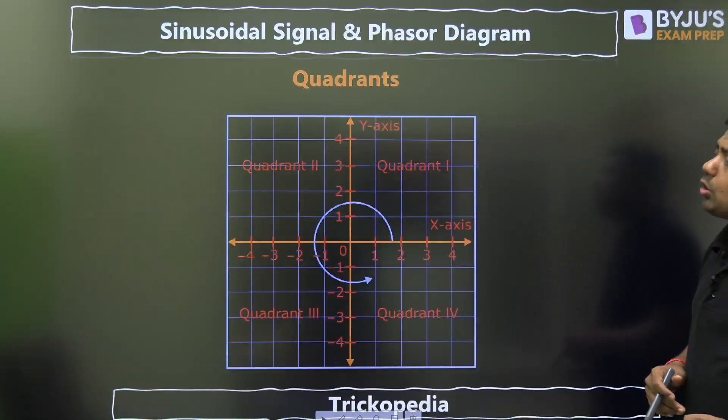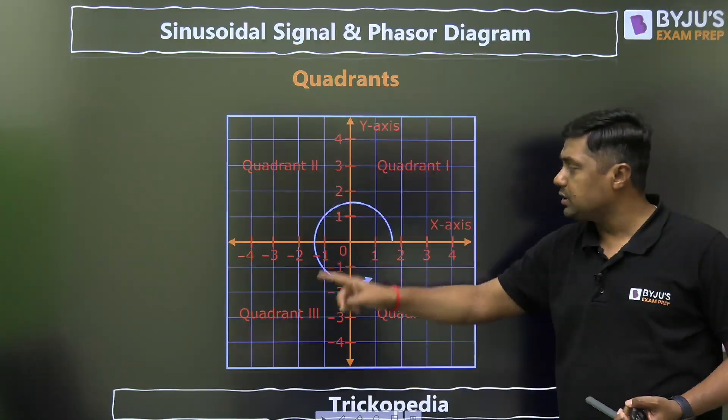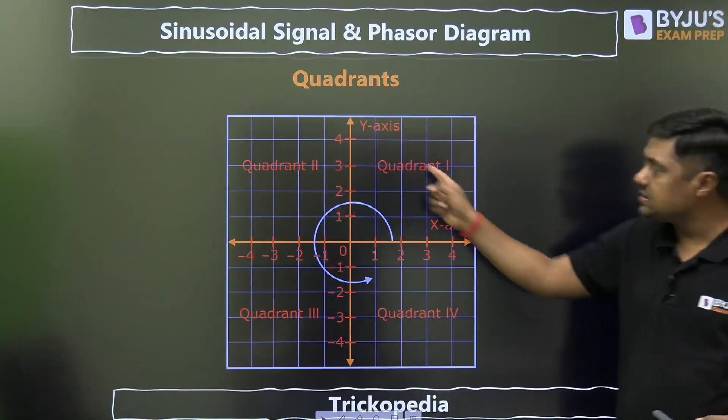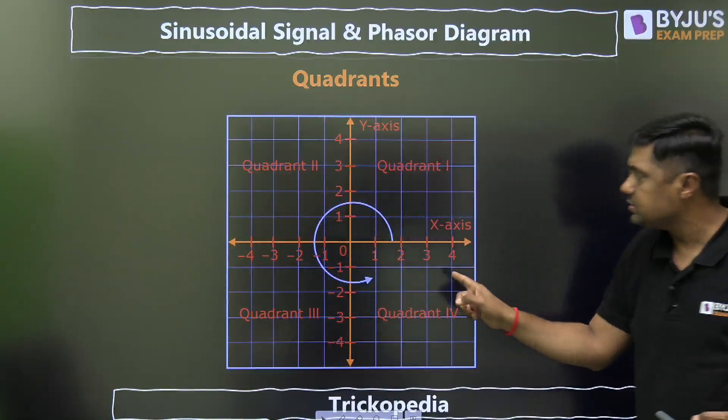Then, basic idea about the quadrant. This is called first quadrant, second quadrant, third quadrant, fourth quadrant. And that is the anti-clockwise journey, and this is called clockwise journey.